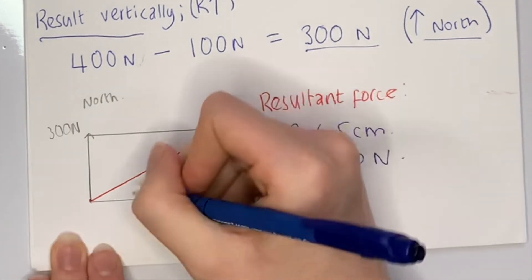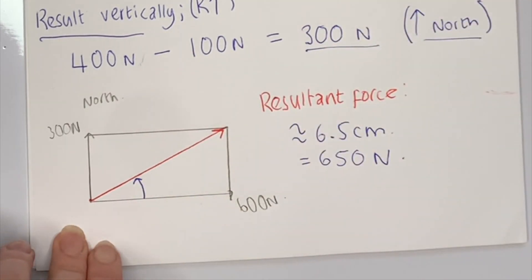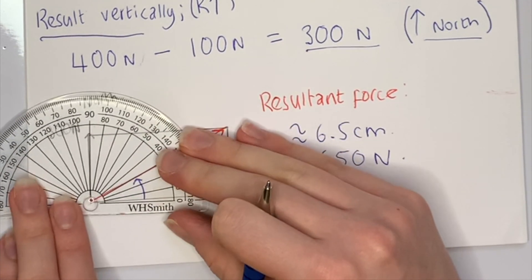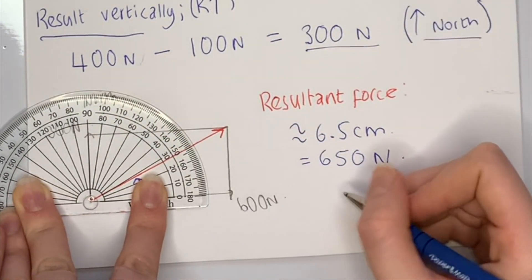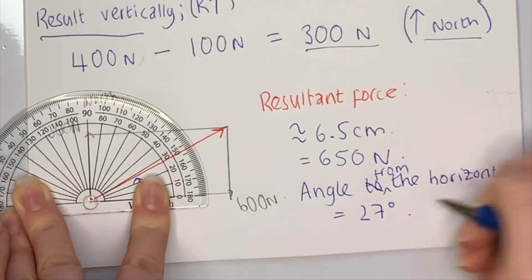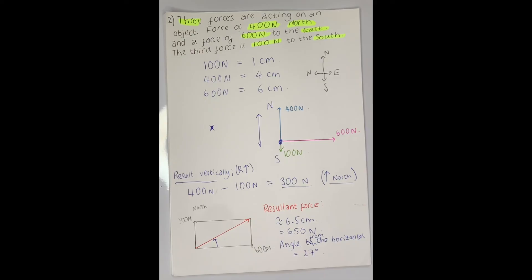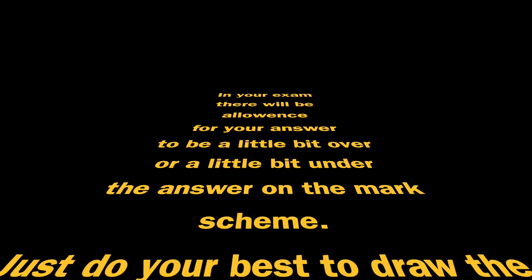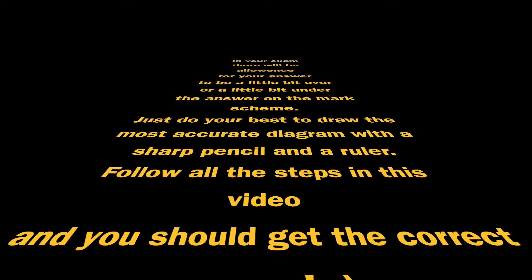For the direction, we measure this angle with our protractor and get about 27 degrees from the horizontal. So there are two examples of ways we can work out resultant force, and I hope that's all clear. If it isn't, you're welcome to leave questions in the comment section below. Thank you for watching.